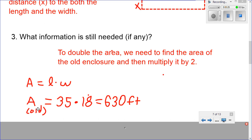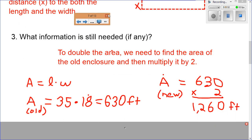So, our area of our old is equal to 35 times 18, or length times width. And if we multiply that out, we get 630 feet. Okay, to find the area of the new, we must then multiply this 630 feet by 2. So, the area of the new, let me get that out of the way. Okay, it's 630 times 2, or 1,260 feet. This is the area of the new, which is double the area of the old.